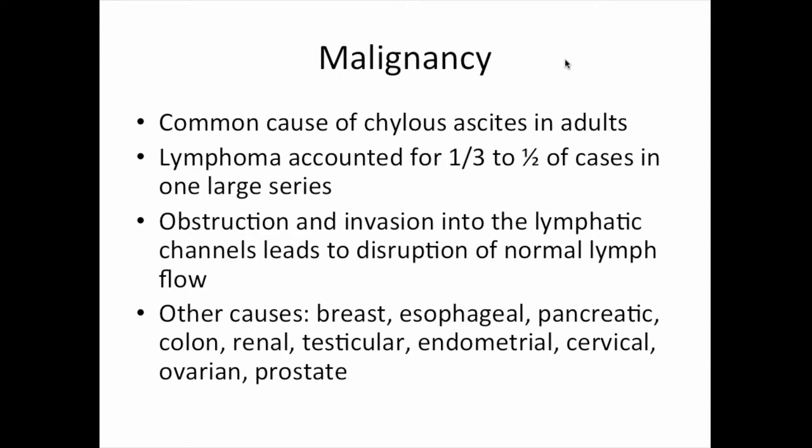Malignancy is the most common cause of chylos ascites in adults. Lymphoma alone accounts for one third to one half of all cases in some case series. The mechanism is obstruction and invasion of the lymphatic channels, leading to disruption of normal lymph flow. Other potential malignant causes of chylos ascites are listed here.